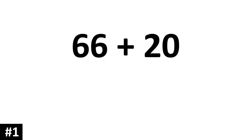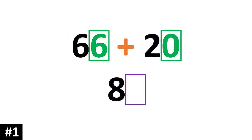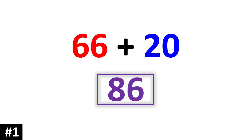Let's take a look at this first example: 66 plus 20. The key to adding a two-digit number by a multiple of 10 is first we ignore the ones column and just focus on the tens. 66 has 6 tens and 20 has 2 tens. So first we just add 6 plus 2, which gives us 8 tens. Then we look at the ones column: 6 ones of 66 plus the 0 ones in 20 gives us 6. So 66 plus 20 is 86.